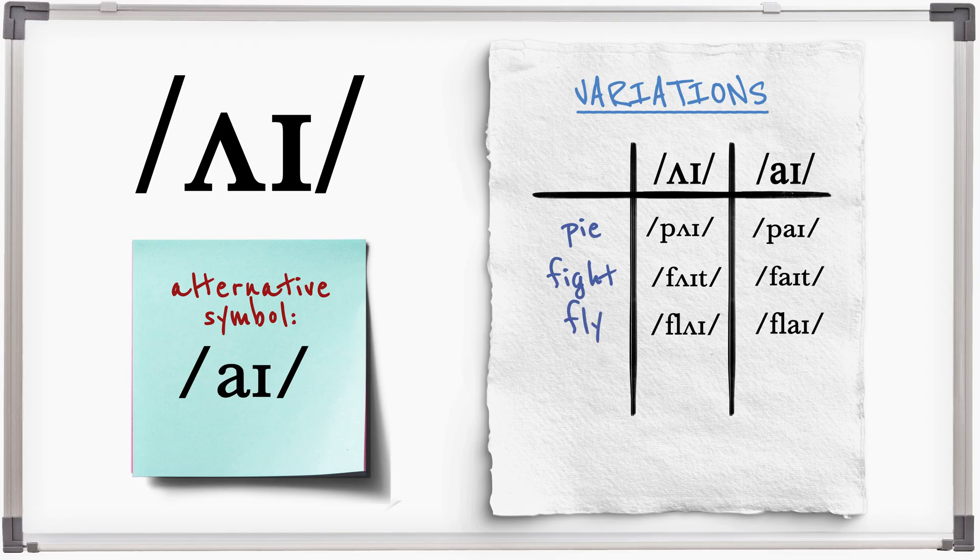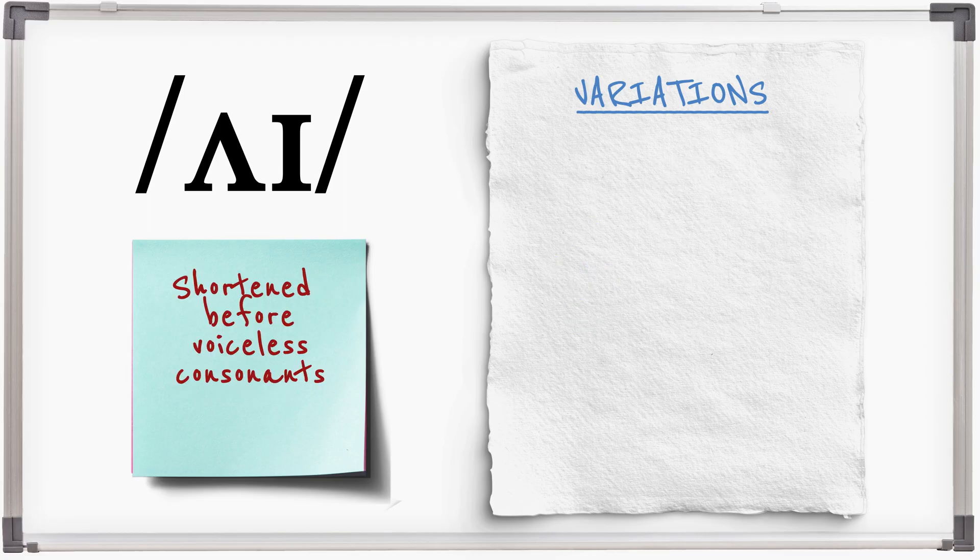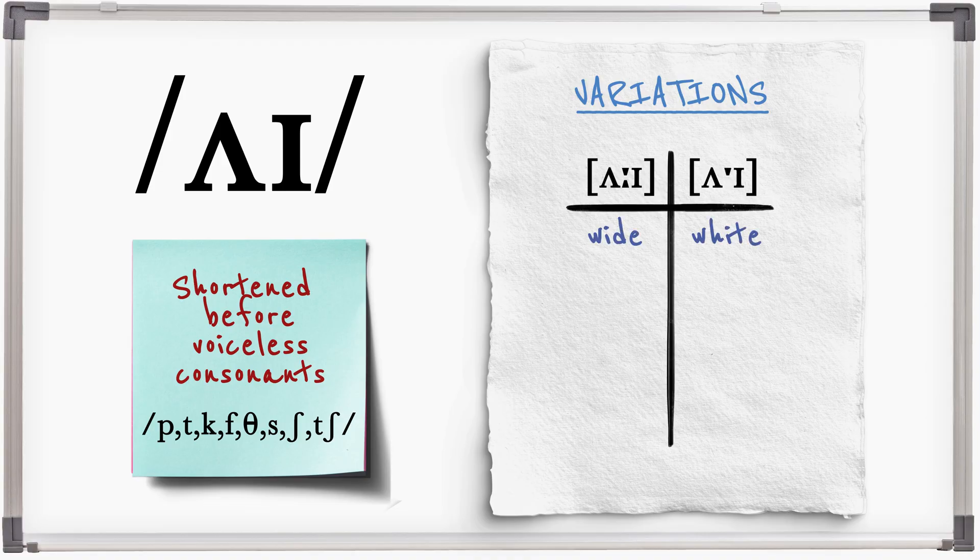FLY. I is a long vowel sound, so it's shortened before voiceless consonants. Compare: wide, white, live, life, eyes, ice, a rival, a rifle.